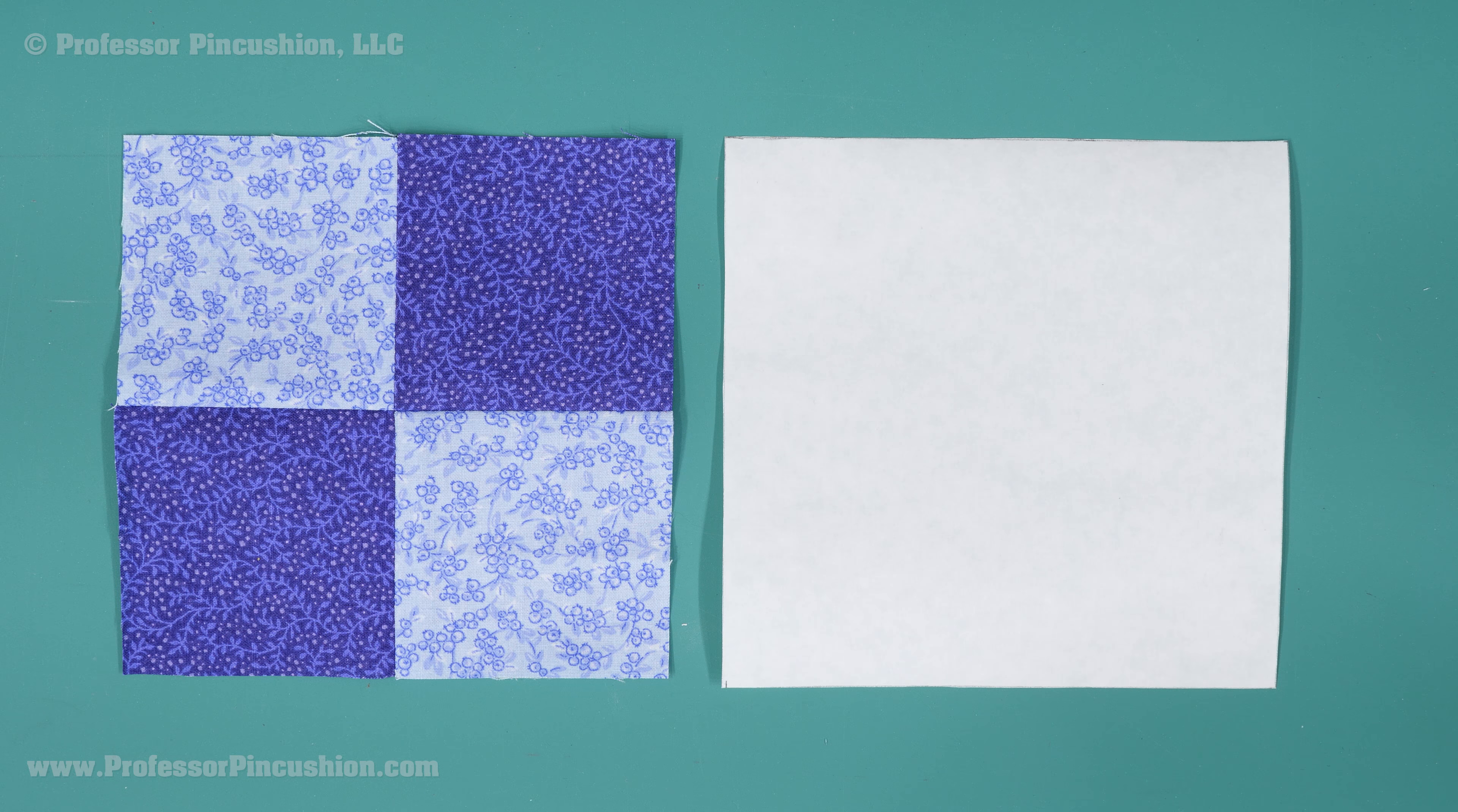What happens if your block falls a little short of being the correct size? For this, you'll need some freezer paper. Cut a square of freezer paper the exact size you want your block.